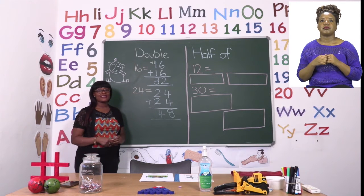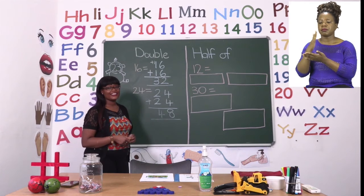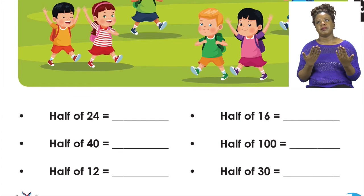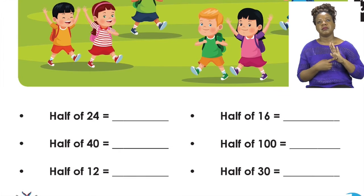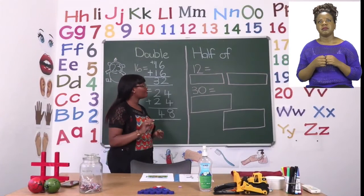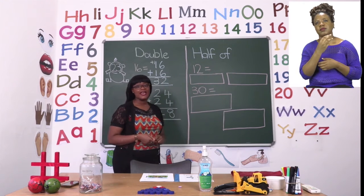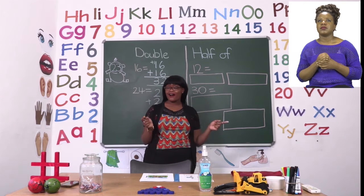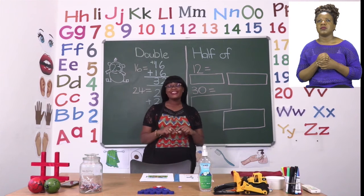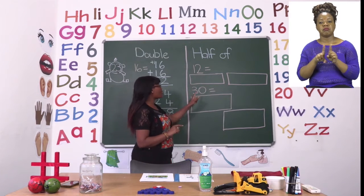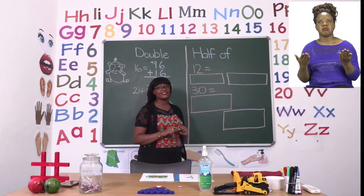Now that we're done with doubling, let's go over to halving. Halving is the exact opposite of doubling. We want to show you by using half of 12 and then half of 30. So I have half of 12 here. Instead of just cutting the number 12 in half, we are going to share equally in two boxes. Because remember, you can share and find your answer.